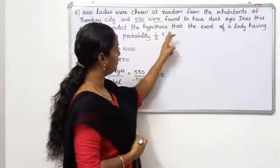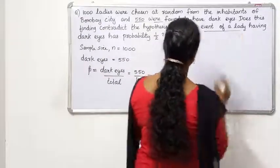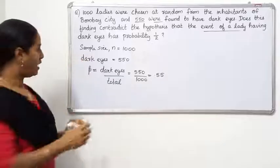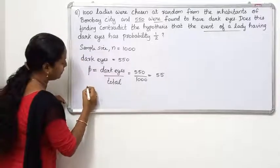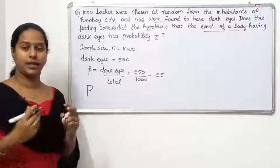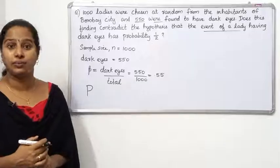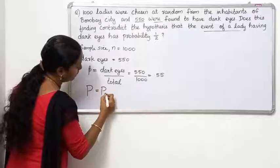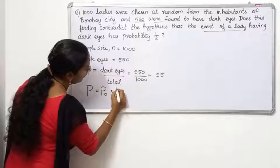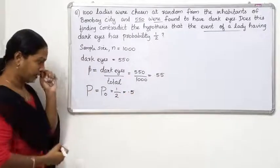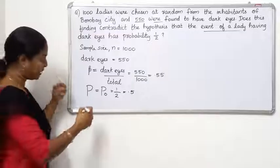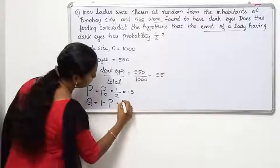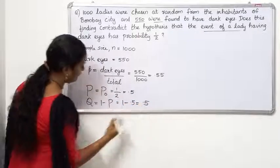The hypothesis states that the event of a lady having dark eyes has probability 1 by 2. So the population proportion capital P is 1 by 2, which is equal to 0.5.